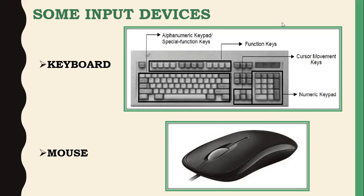The rest of the input devices will be covered in the next class. Please revise today's topics: types of memory, types of primary memory, difference between RAM and ROM, difference between secondary memory and primary memory, types of secondary storage devices, their storage capacities, and how they differ in storage capacity and processing nature.